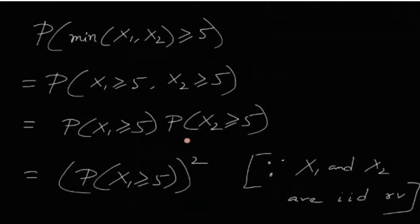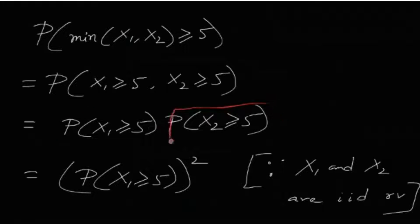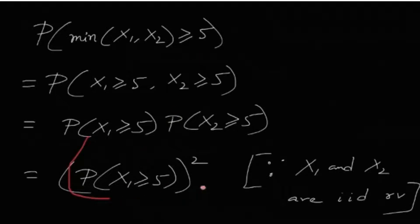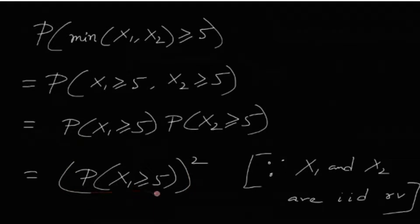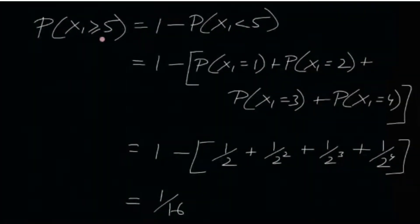Because they are independent, we can split them out. But since they are also identically distributed, the probability of X1 ≥ 5 is exactly the same as the probability of X2 ≥ 5. That means P(min(X1, X2) ≥ 5) is nothing but P(X1 ≥ 5) squared. So we only need to find the value of P(X1 ≥ 5), which is easy since the PMF is given.